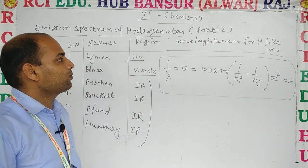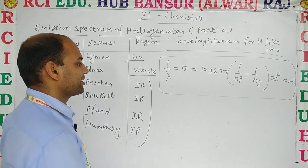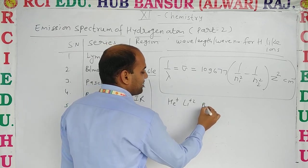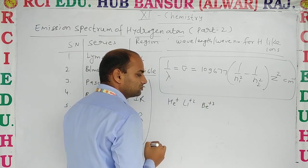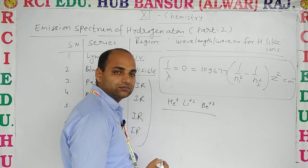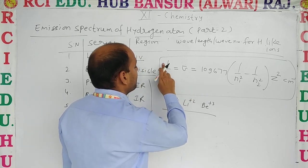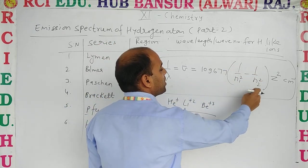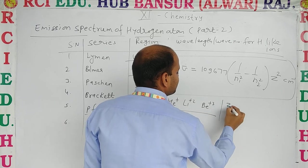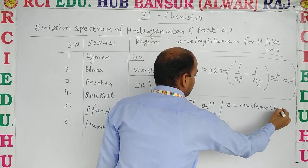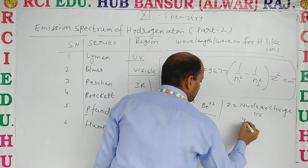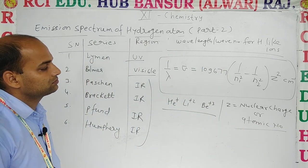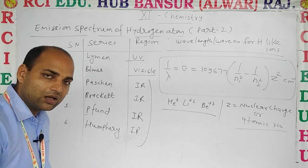So the formula for wavelength and wave number for H-like ions is: 1/λ = ν̄ = 109677 × (1/n1² − 1/n2²) × Z². H-like ions can be: helium⁺ (He⁺), lithium²⁺ (Li²⁺), beryllium³⁺ (Be³⁺). Here Z is the nuclear charge, which is the same as the atomic number. These are the hydrogen-like atoms.